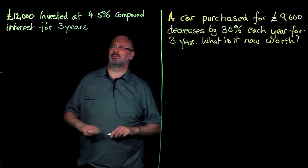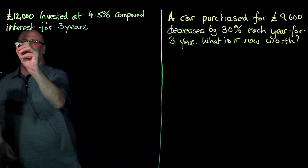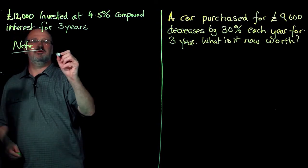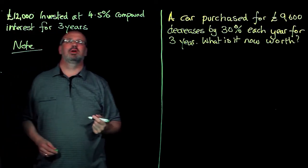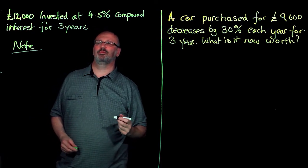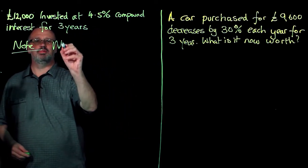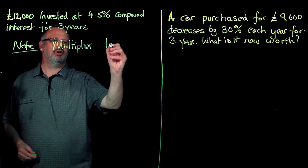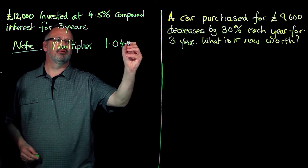So let's look at this first one. Note, if I am having an interest of 4.5%, my multiplier is going to be 1.045.